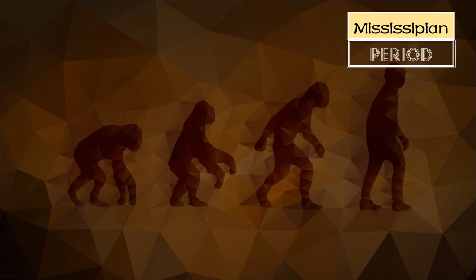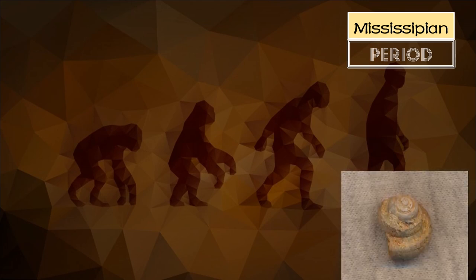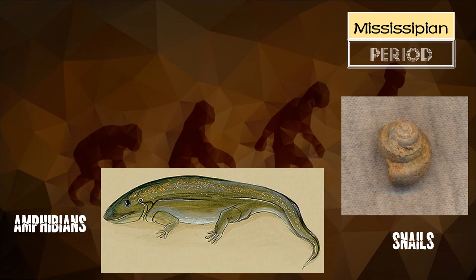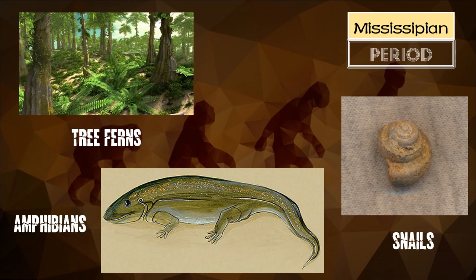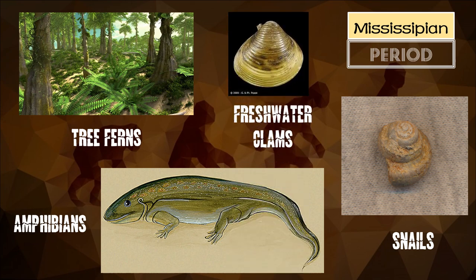We have also the Mississippian period. It extended from 354 million to 323 million years ago. Living things in the Mississippian period were snails, amphibians, tree ferns, sharks, and freshwater clams. In the Mississippian period, trilobites are becoming rare and armored fish became extinct.